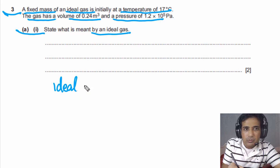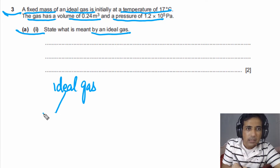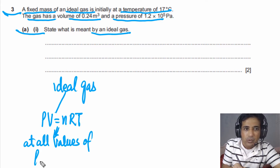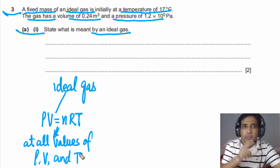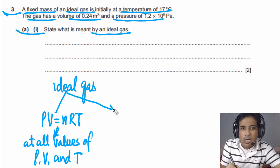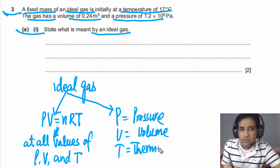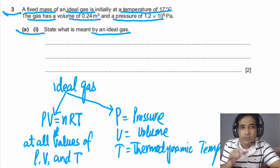In order to state what an ideal gas is, you need to mention a few points. The first point: a gas is an ideal gas if it obeys the ideal gas equation PV = nRT, and it has to obey this equation at all values of P, V, and T. If a gas obeys the ideal gas equation at any value of P, V, and T, then that gas is an ideal gas. You also need to state what each quantity represents: P, V, and T — where T is the thermodynamic temperature in Kelvin. If you write down these points, you will get two marks.